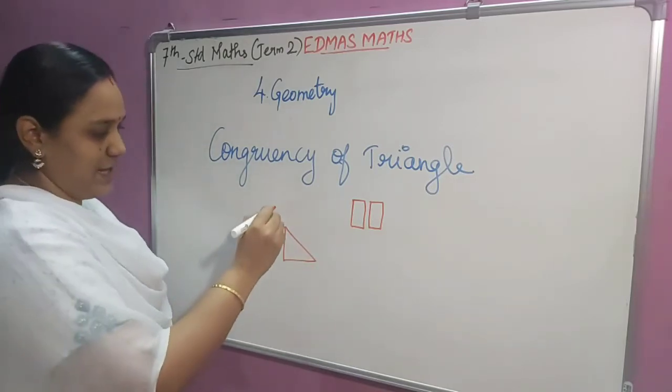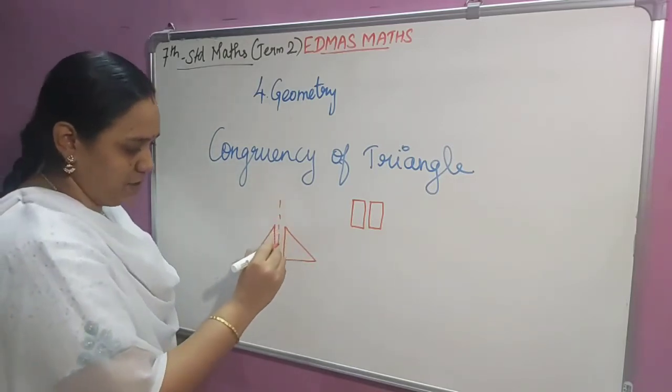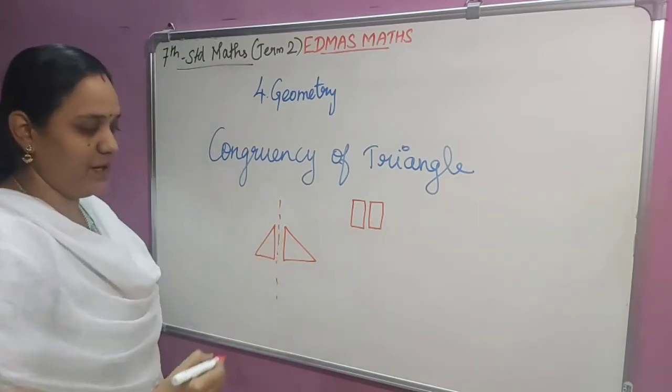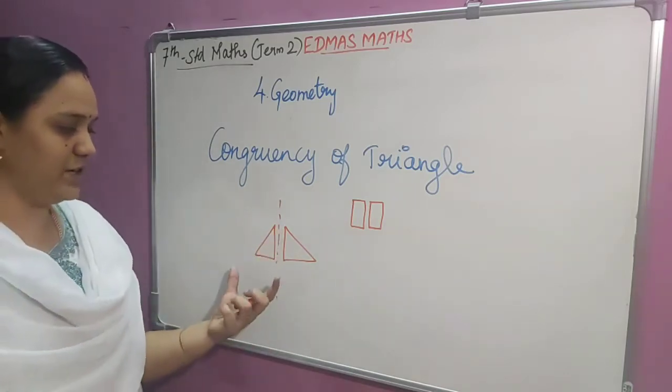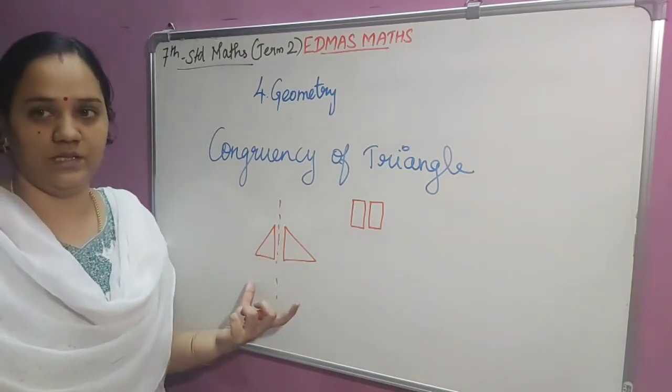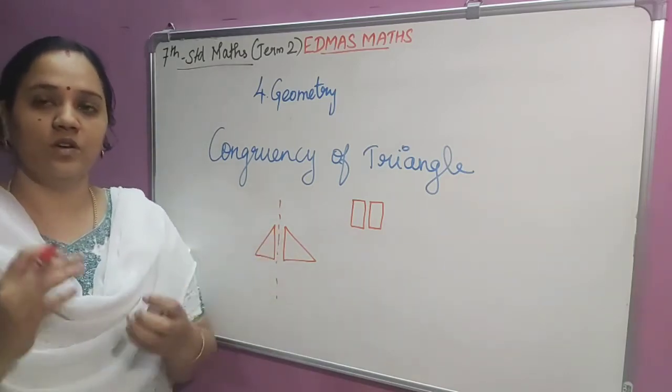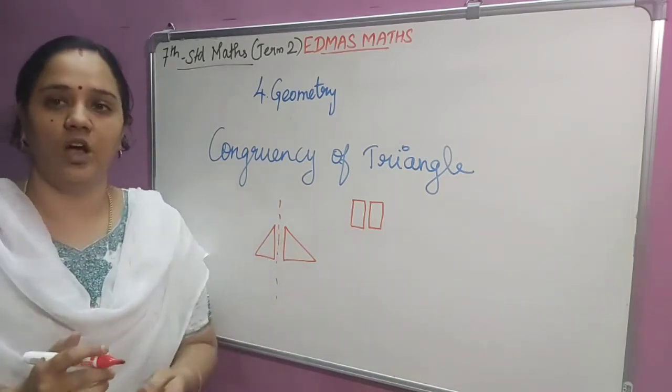This picture is like a mirror image. If you are placing a mirror here, it will look like this. So this is known as congruence.